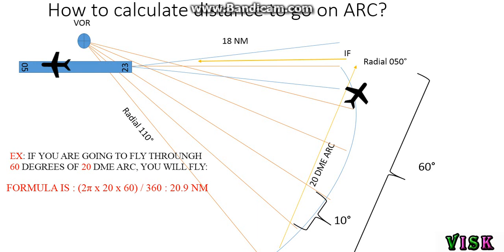I think this formula is so long and we could not calculate by memory easily. They have another simplified formula: radians multiplied by arc divided by 60. For the example above, 60 multiplied by DME 20 divided by 60 equals 20 nautical miles to go on the arc. I think this formula is simplified also, but they have another simplified formula for us. Let's go to another slide.